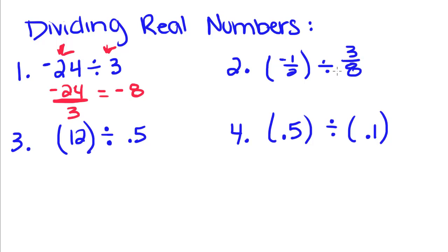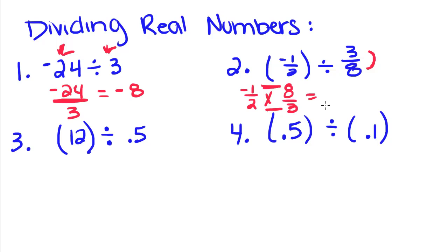When we divide fractions, we use the keep-change-flip rule. First, you keep the first term exactly as it is: negative 1/2. Then you change the division sign to multiplication. Then you flip the second fraction to get 8/3. Then you multiply across the top and bottom, giving us negative 8 over 6. We always want to reduce our fractions — since 2 goes into both evenly, we get negative 4/3.